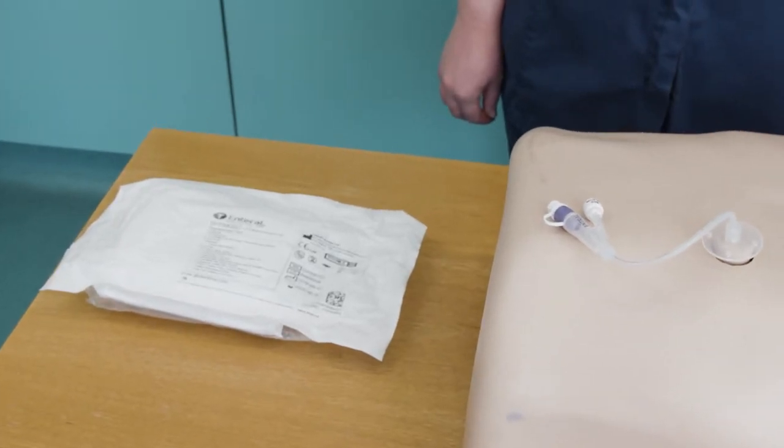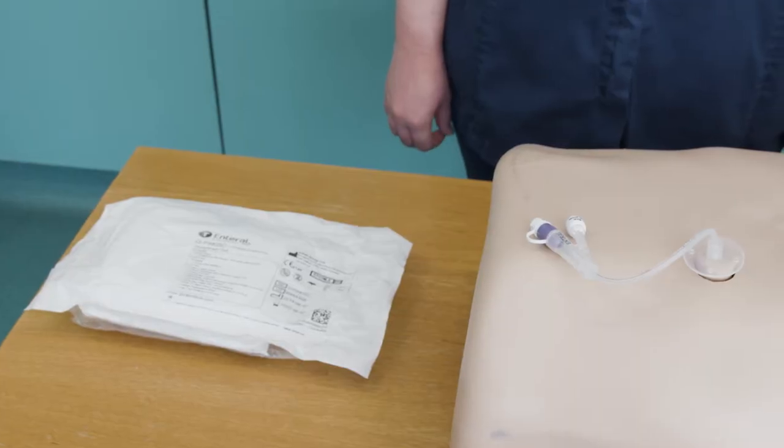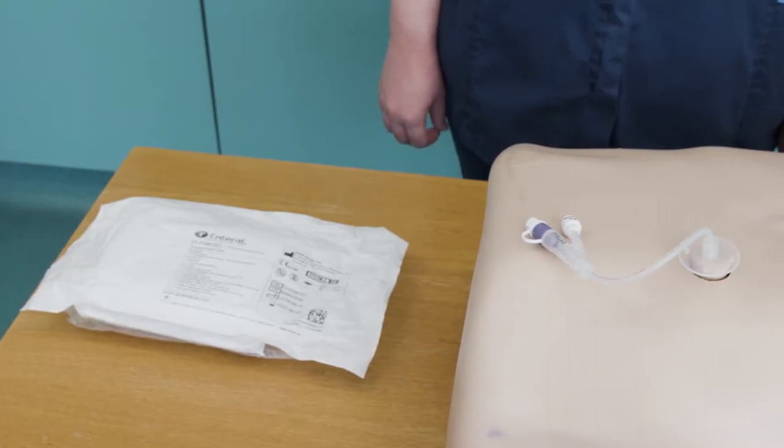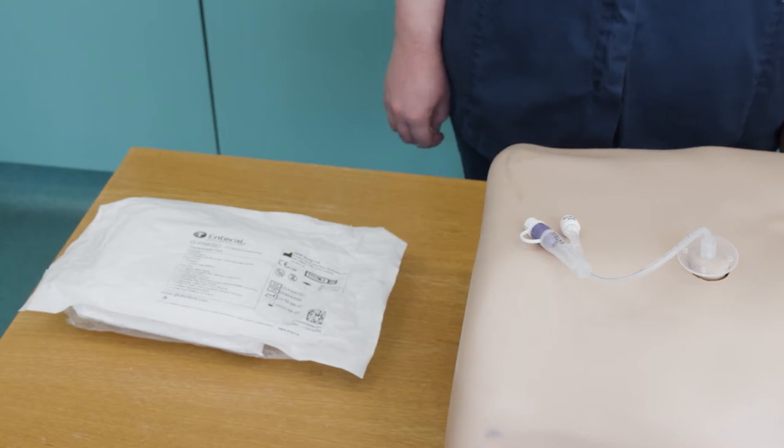Check the patient has been nil by mouth or nil via their tube for at least two hours unless you are replacing the tube because the previous one has fallen out. Check that the patient hasn't taken any medication pre-procedure that may exacerbate bleeding (anticoagulant medication) or affect their pH levels in the stomach, i.e. lansoprazole or omeprazole.